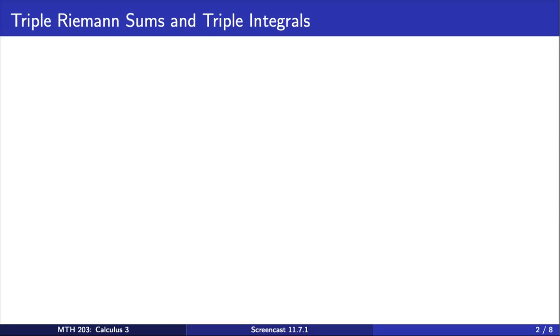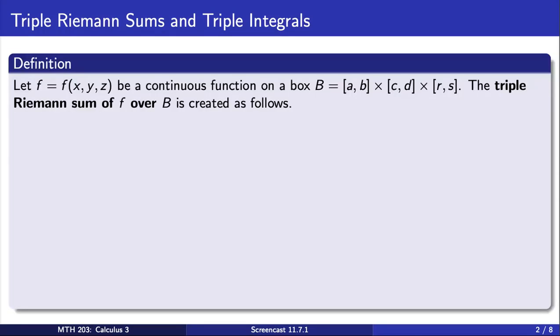We proceed by defining both a triple Riemann sum and the corresponding triple integral. Consider a function f of three variables defined on a box capital B. To construct the triple Riemann sum, we use a very familiar procedure.